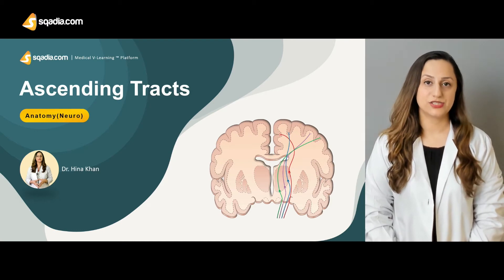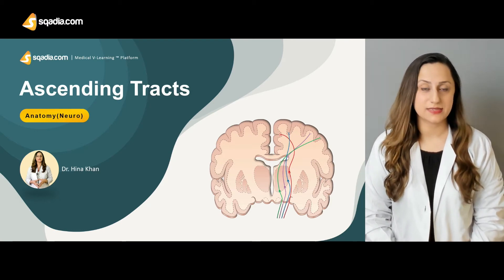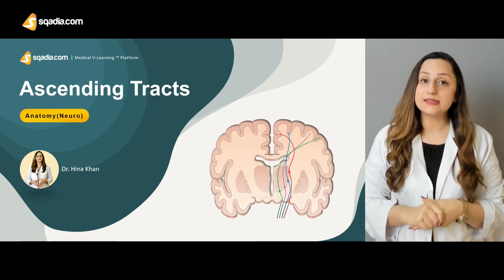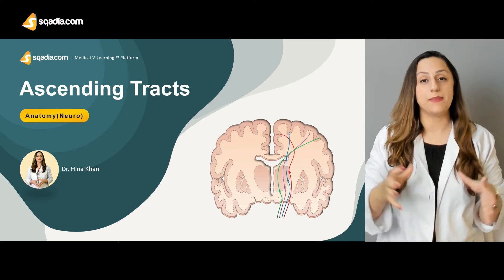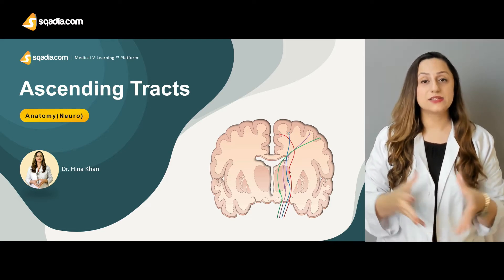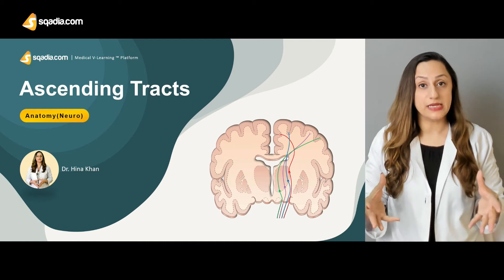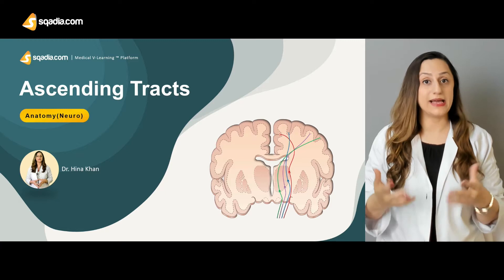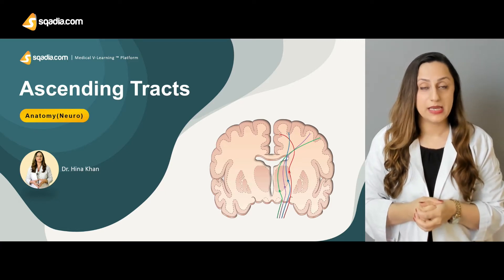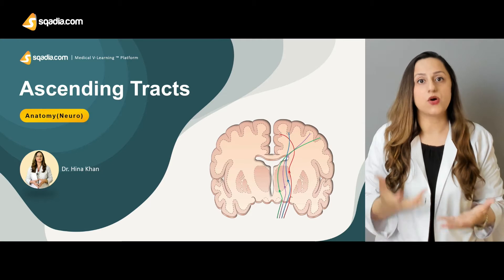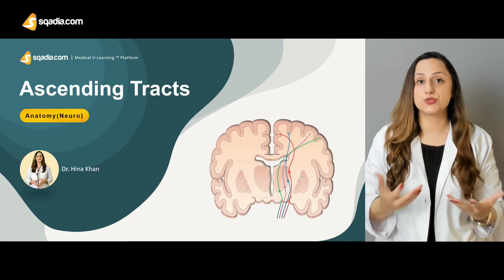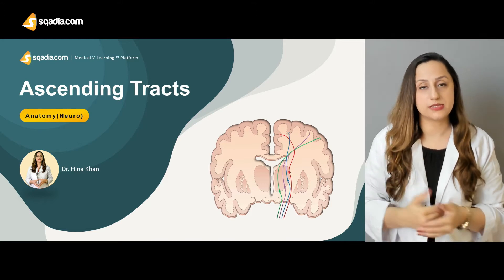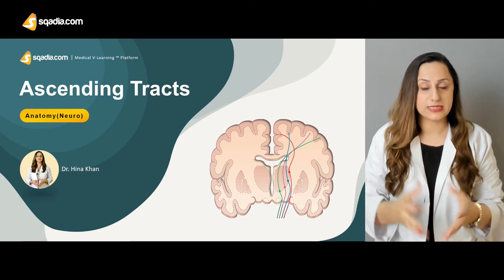Today, the topic under discussion is the ascending tracts. When we use this terminology of ascending tracts, basically we are considering the pathways that are taking the information from the periphery towards the central nervous system, which I'll be terming as the head brain, for integration and for a response to occur as a result of that particular stimulus that is taken to the central nervous system.